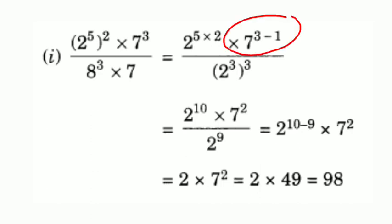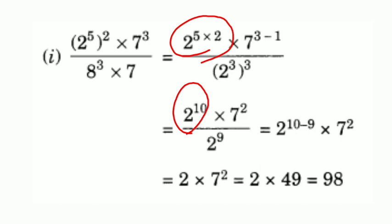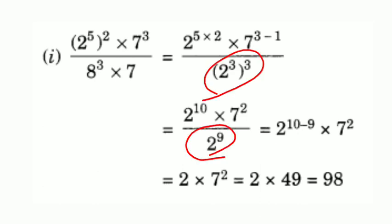We can write 7 raised to 3 minus 1. In the denominator, we have 8 raised to 3. Now, 8 can be written as 2 raised to 3, since 2 into 2 into 2 equals 8. So 8 raised to 3 becomes 2 raised to 3, all raised to 3. Then, 2 raised to 5 into 2 means 2 raised to 10. 7 raised to 3 minus 1 means 7 raised to 2. The denominator becomes 2 raised to 3 into 3, that is 2 raised to 9.